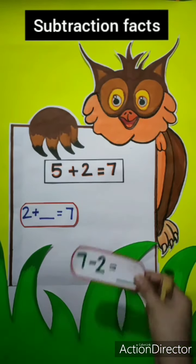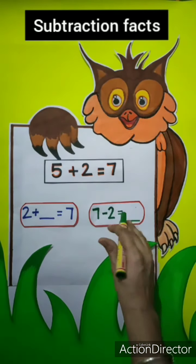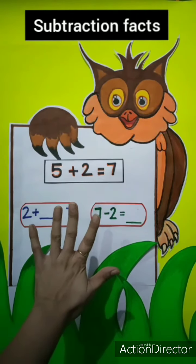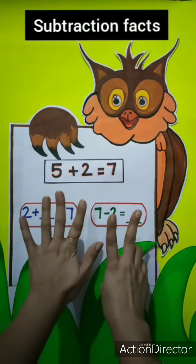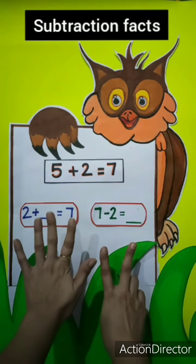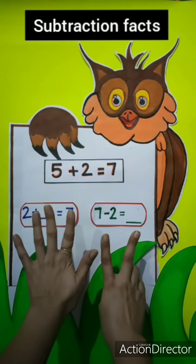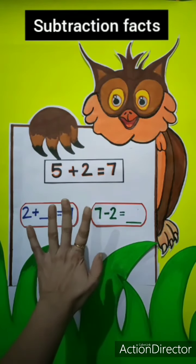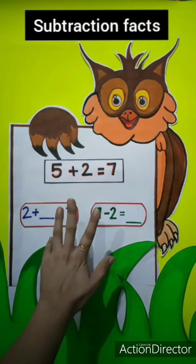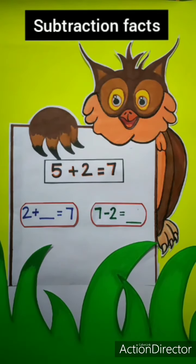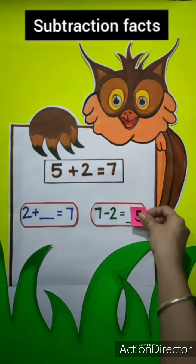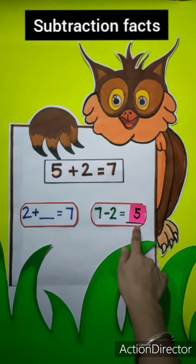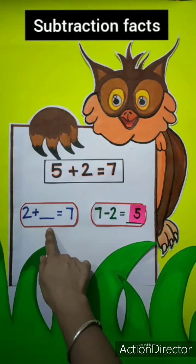Let's try. This is 7 minus 2. So these are 5 fingers and add 2 more — now 7. 7 minus 2, so we have to remove 2 fingers: 1, 2. How many are left? 1, 2, 3, 4, and 5. So we have 5. So we have to write here 5. 7 minus 2 is equals to 5.